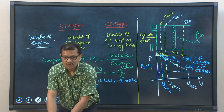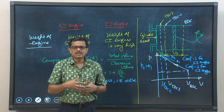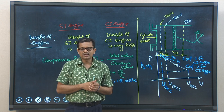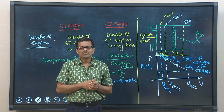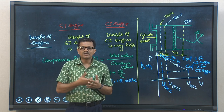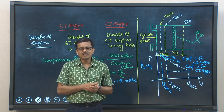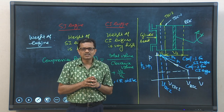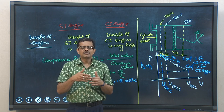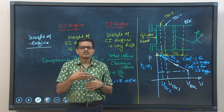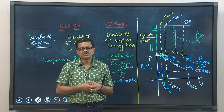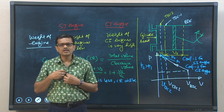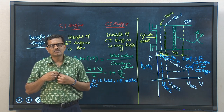To summarize today's discussion: we discussed the most important differences between four-stroke and two-stroke cycle engines, then the fundamental differences between CI and SI engines, and finally introduced the important terminology of compression ratio — defining it and discussing the consequences of higher compression ratio in the context of internal combustion engines. We shall continue in the next class.